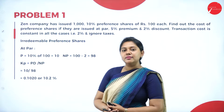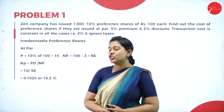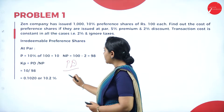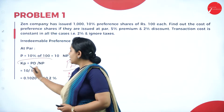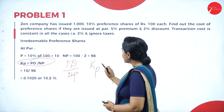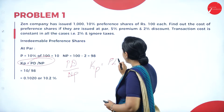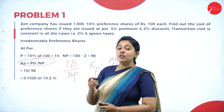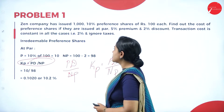What is the formula for irredeemable preference shares? That is preferential dividend divided by net proceeds. Cost of preference is equal to preferential dividend divided by net proceeds. This is the formula. Let us read out the question.